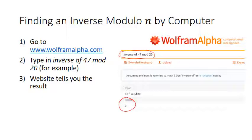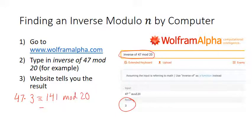We can check that this is really the case. If we do 47 times 3, we get 141. Then 141 mod 20 — we subtract all copies of 20, or equivalently do long division of 141 by 20 — and the remainder is in fact 1. So that shows us that 47 and 3 are really inverses mod 20, because when you multiply them together you get 1 mod 20.